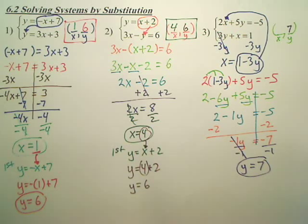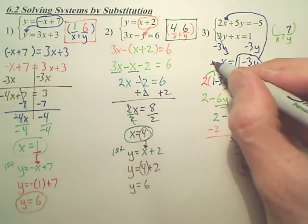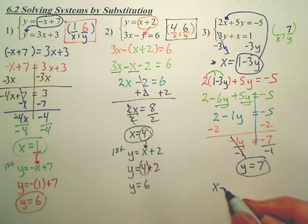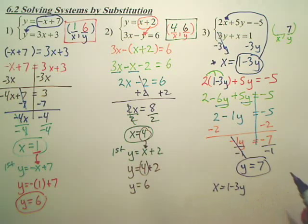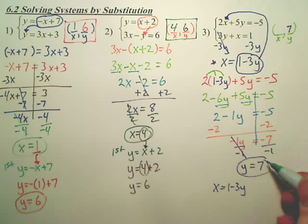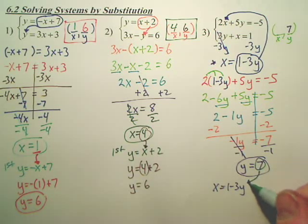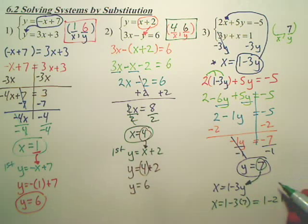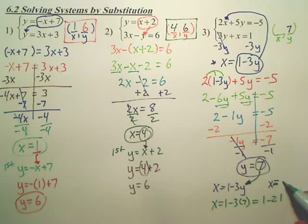Am I done? No. Don't I have to find x? Now, wouldn't this be the easiest equation to deal with? If I just take x equals 1 minus 3y, couldn't I come and just take this answer, stick it right there, and get x equals 1 minus 3 times 7, which is 1 minus 21. What's x? Negative 20?